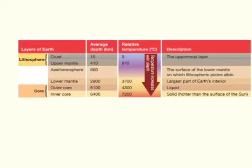As you go deeper down, temperature rises. On a Celsius scale, the crust starts at zero degrees. The upper mantle would be 870 degrees. The lower mantle would be 3700 degrees. The outer core would be 4300 degrees. The inner core would be 7200 degrees.